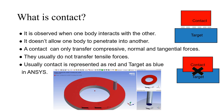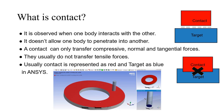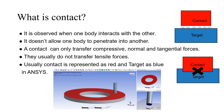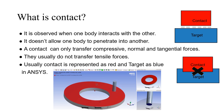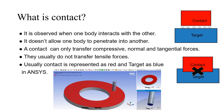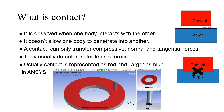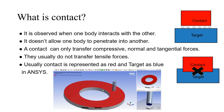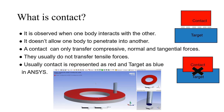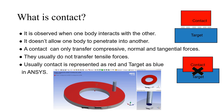In ANSYS, two bodies in mechanical contact are named: one as 'target' and the other as 'contact.' Contact is represented in red and target in blue. For example, in a pin and disc analysis, the disc is shown in red (contact) and the pin in blue (target). How to select contact and target depends on your physics and mesh, which will be explained in other videos.